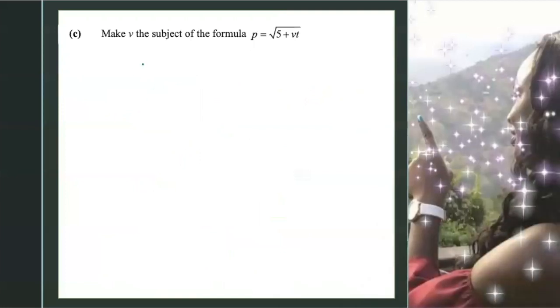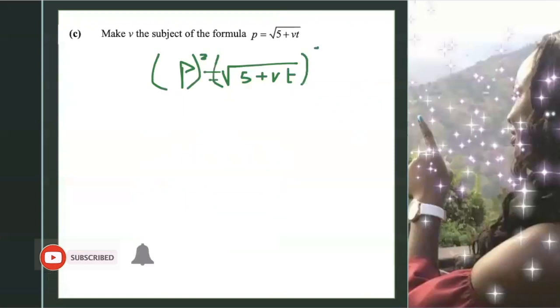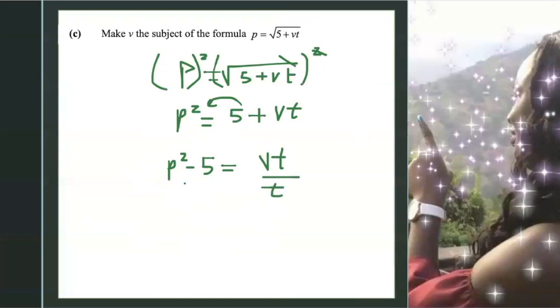The next question, we make v the subject of the formula. So we need to make v by itself. So what I'm going to do, since I have a square root, to get rid of square root, I will square both sides. So this becomes p² equals, square root cancels the square, so I have 5 plus vt. Then carry the 5 over, so it becomes negative. So I have p² minus 5 equals vt. Then we divide both sides by t. This cancels. So v equals p² minus 5 over t. And that's it.